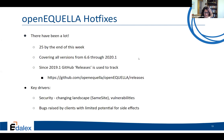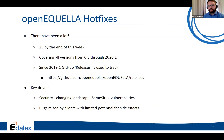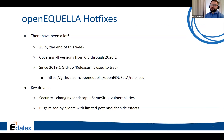And hot fixes — there's been a lot. By the end of this week there will be 25 in total just for this year, covering every version from 6.6 up to 20.1. A couple were released just yesterday for some security issues. Since 2019.1 we started using the GitHub releases feature to track hot fixes.